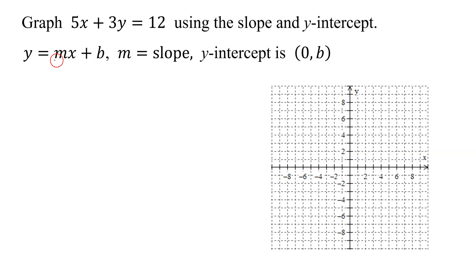where m, the coefficient of the x term, is the slope, and the y-intercept is the ordered pair where the x-coordinate is always 0, and the y-coordinate comes from b in the equation. So if I look at my equation given, is it in slope-intercept form? No.